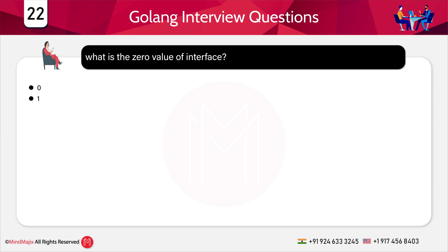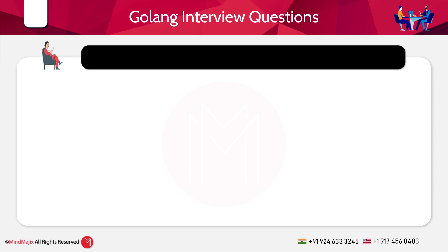What is the zero value of an interface? Options: a) zero, b) one, c) nil, d) none of the above. The answer is c) nil — the zero value of an interface is always nil.